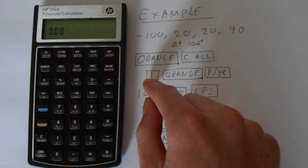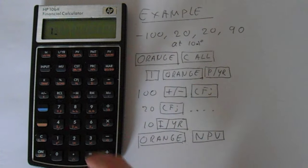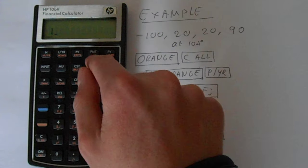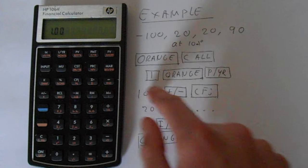To change that, we press one. Then go orange and then payment per year, which is somewhere near the top up here, that changes that.